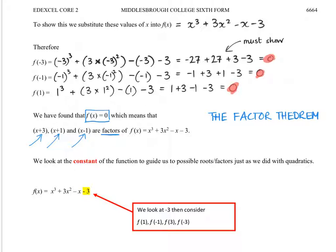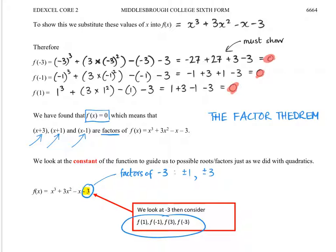If we're not told what numbers to put in - when we had a quadratic, we looked at the end number to see what two numbers went in the bracket. Well, you do exactly the same thing with the cubic. So I'm looking at the minus 3, and that means we have got factors of minus 3. They could be plus or minus 1 or plus or minus 3. So if I try all four of those, there might be a factor or something that makes f of the number equal to 0, and if that happens, then we get a factor.